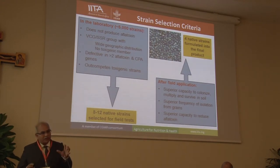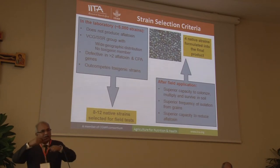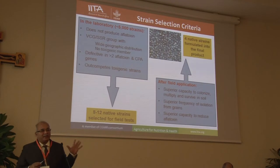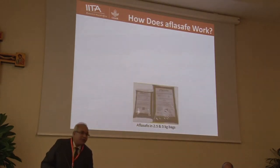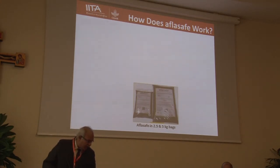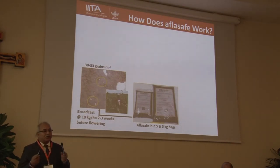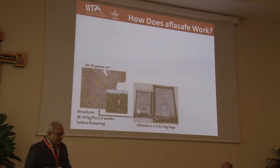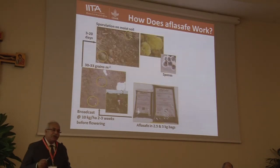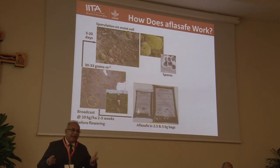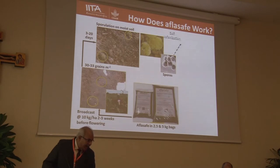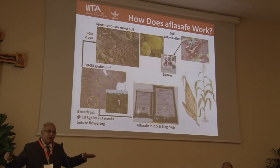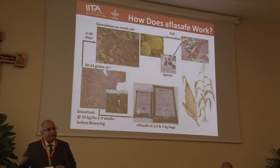We produce the spores of the product, mix them with a polymer and a coloring agent, and coat them on dead sorghum seeds — that becomes our formulated product. We have packages of two and a half or five kilos. All that farmers have to do is two to three weeks before flowering, take it in their hand and throw it on the ground, just like spreading fertilizer. Over about three to twenty days, the fungus coated on the sorghum grain begins to sporulate and spreads throughout the entire environment, replacing all the niches where Aspergillus would grow — the non-toxin-producing fungus grows instead and doesn't allow the toxin-producing fungus to get onto the crop.